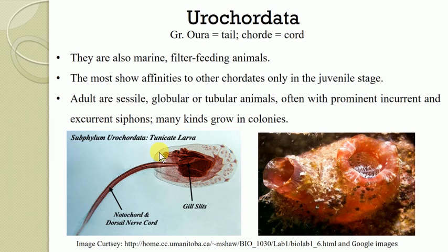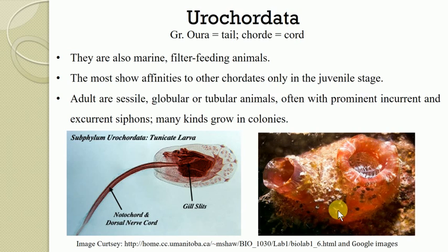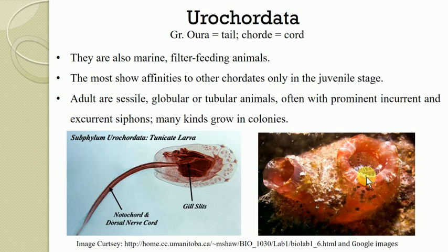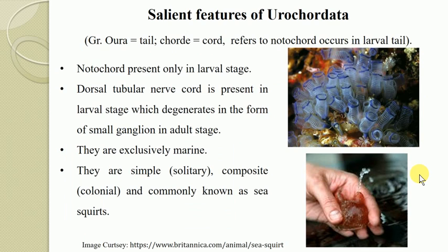Here in the diagram you can see the larval stage of Tunicata, where the tail consists of the Notochord and the Dorsal Nerve Chord. That is the characteristic feature of this group. In the adult stage, adults are sessile, somewhat globular or tubular animals, with two siphons — one incurrent siphon through which water enters the body, and another excurrent siphon through which water leaves.